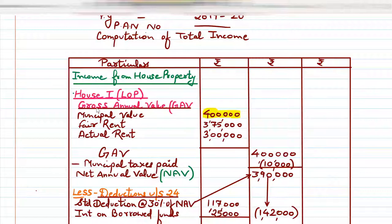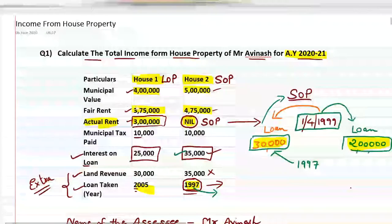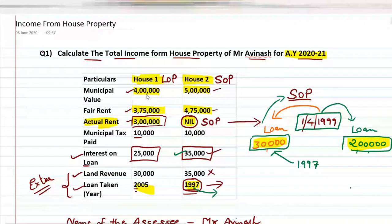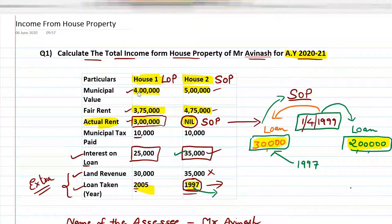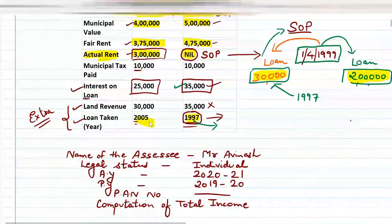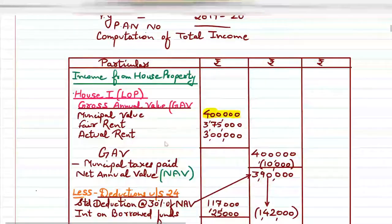First you write gross annual value, which is called GAV. We calculate it from municipal value, fair rent, and actual rent. For house number one: municipal value is ₹4,00,000; fair rent is ₹3,75,000; actual rent is ₹3,00,000. Among ₹4,00,000, ₹3,75,000, and ₹3,00,000, whichever is higher is your GAV.